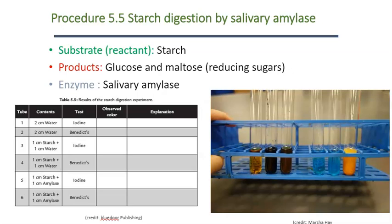The last experiment in the enzyme lab involves a different enzyme: salivary amylase. Note that the enzyme ends in -ase, one way to identify which molecule is the enzyme. Salivary amylase, as the name gives away, is produced in your salivary glands. What it does is take the reactant starch — a polysaccharide, a big carbohydrate — and perform a hydrolysis reaction to break that starch into smaller reducing sugars like glucose and maltose.